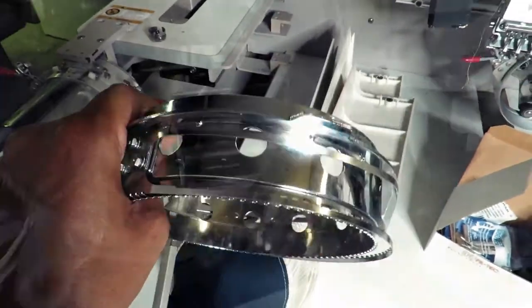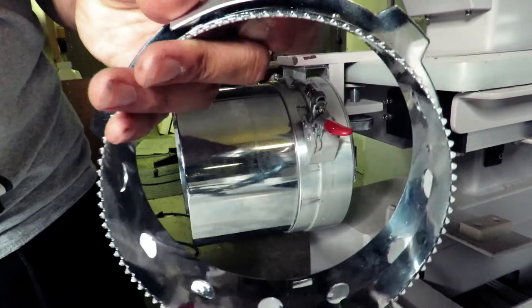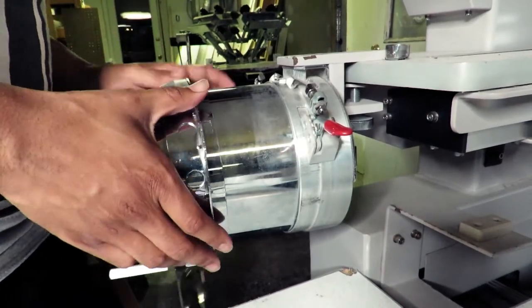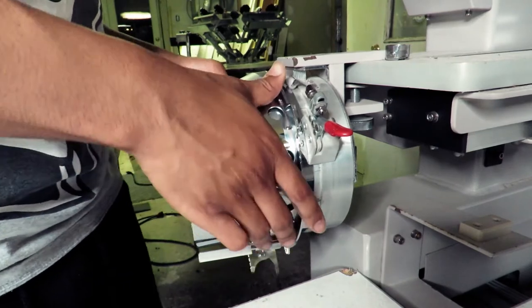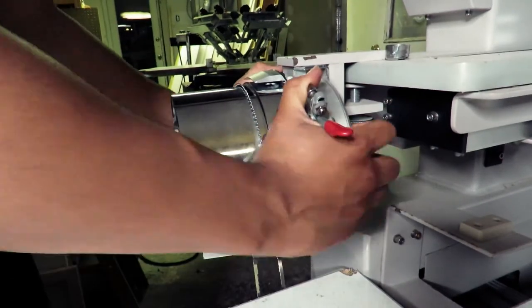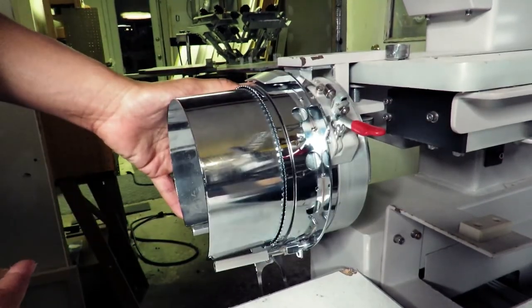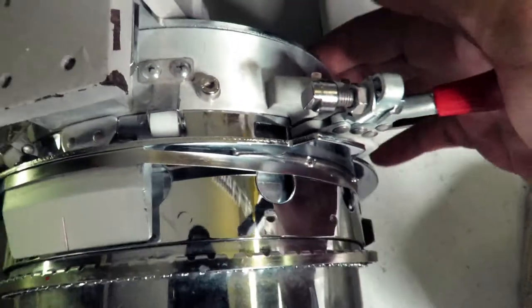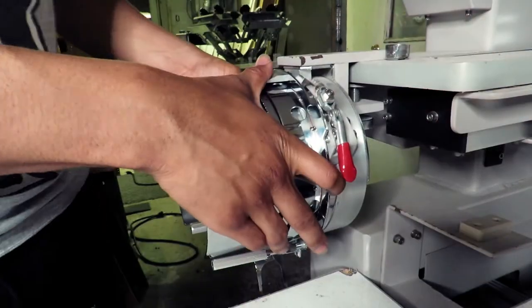So first step you want to take your hoop here and you want to slide it right on to your hooping mount here just like so. Once you slide it on you want to secure these little pegs here so that it locks your hoop into place.